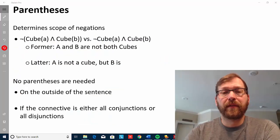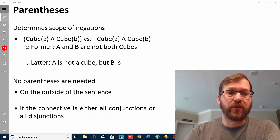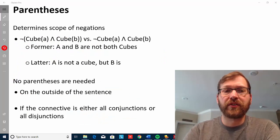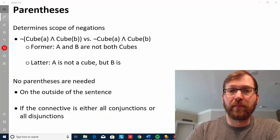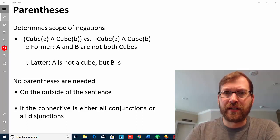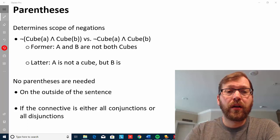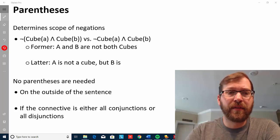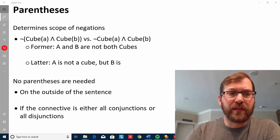One of the other main functions that parentheses has for us with our logical connectives is it allows us to know what the scope of the negation symbol is. So here we have two sentences in FOL that look similar and look like maybe they say the same thing.